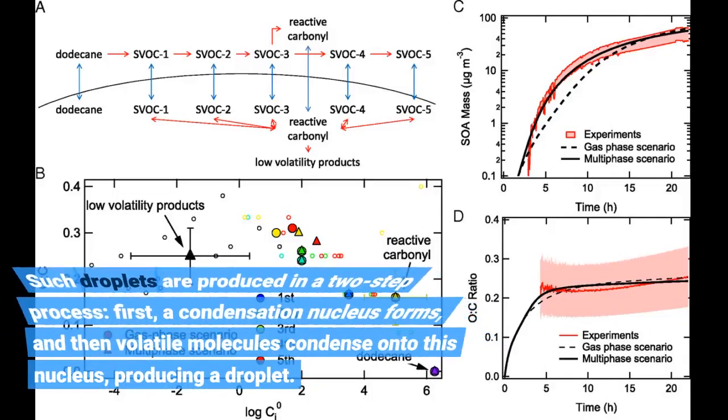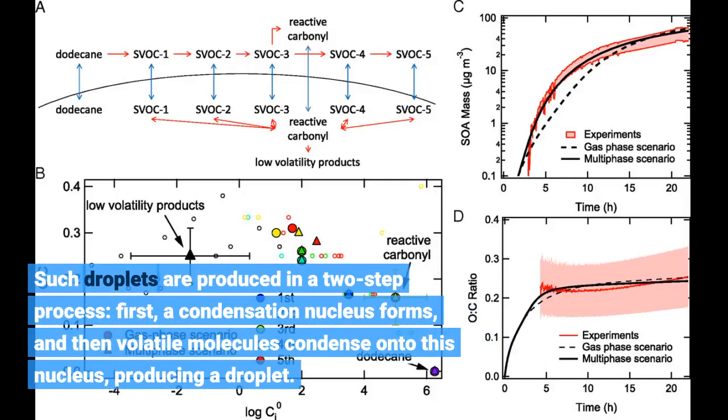Such droplets are produced in a two-step process. First, a condensation nucleus forms, and then volatile molecules condense onto this nucleus, producing a droplet.